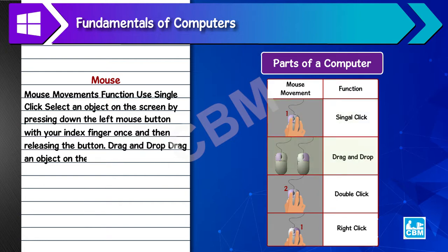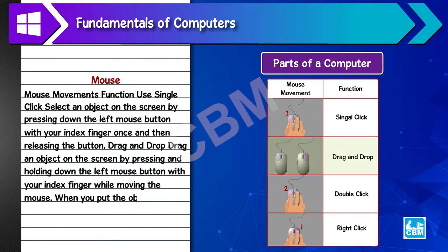6. Drag and drop - drag an object on the screen by pressing and holding down the left mouse button with your index finger while moving the mouse. When you put the object where you want it to be, release the button.